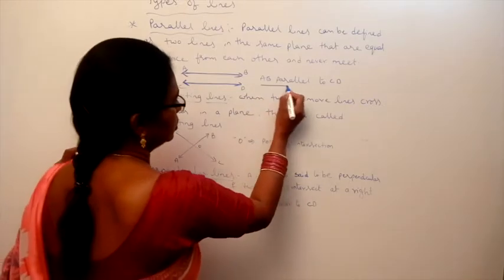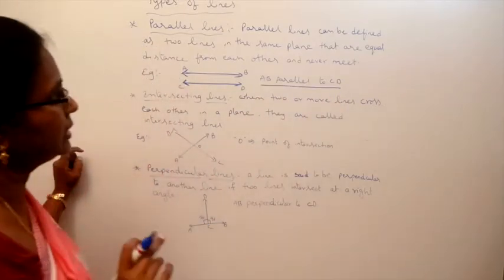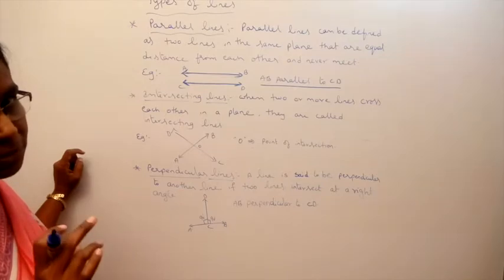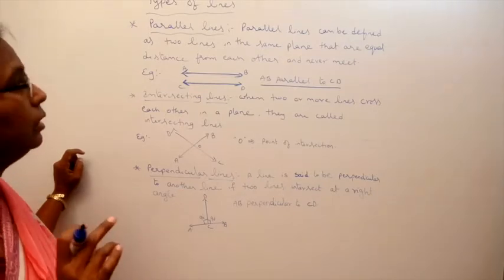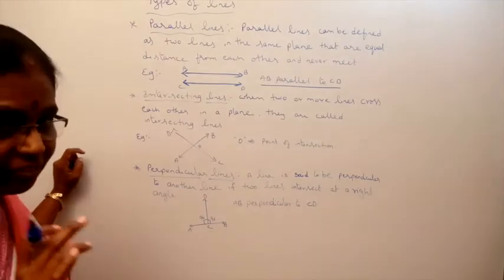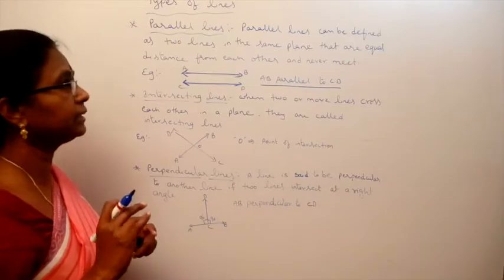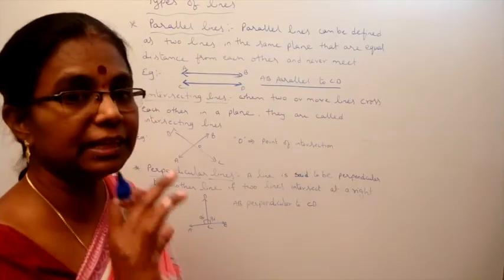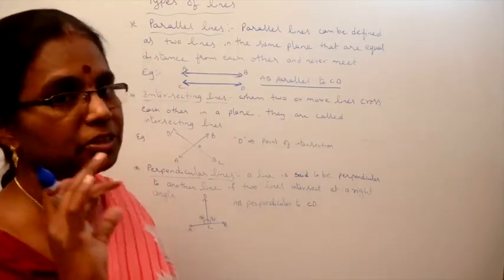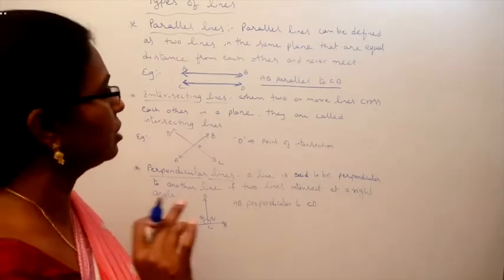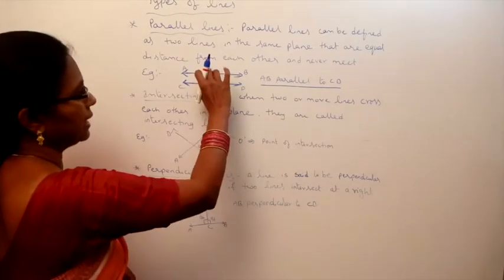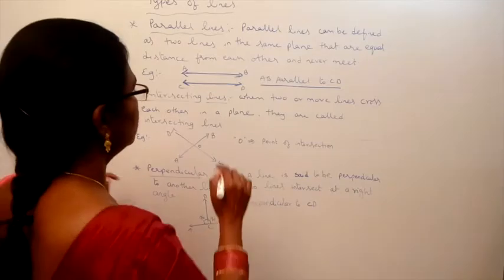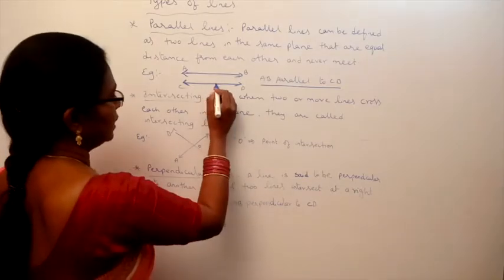So AB is parallel to CD — they never meet. What are non-intersecting lines? Sometimes we can call parallel lines non-intersecting lines. When the distance between two lines is equal at any point, we call those parallel lines.